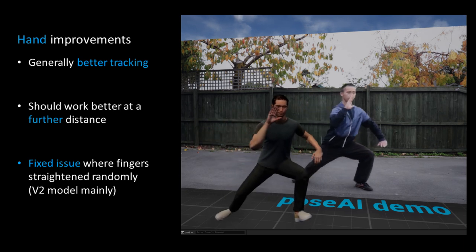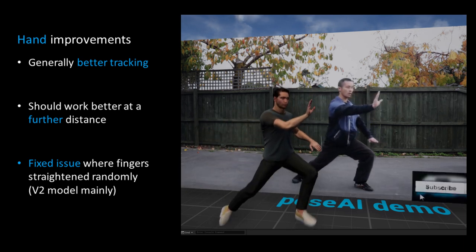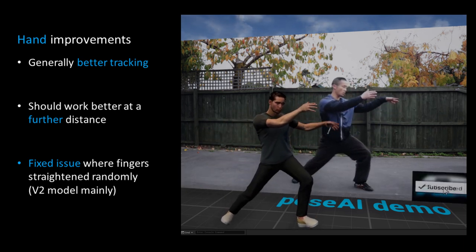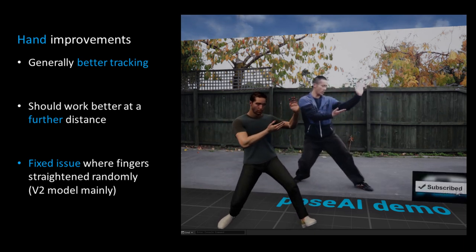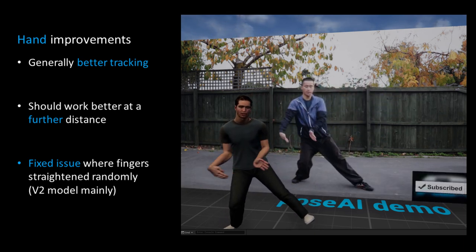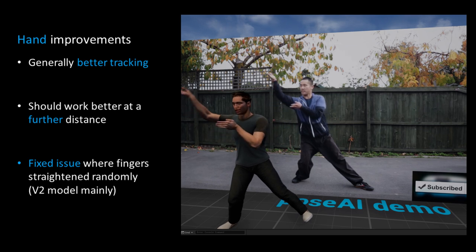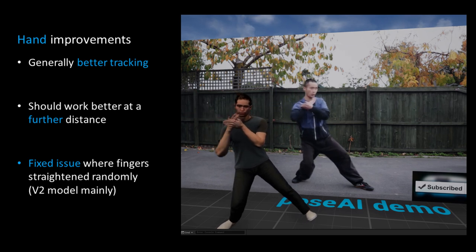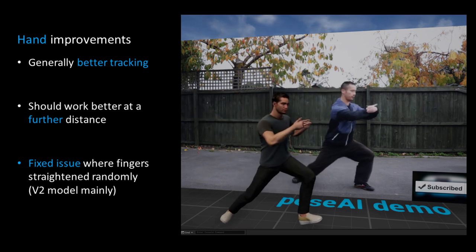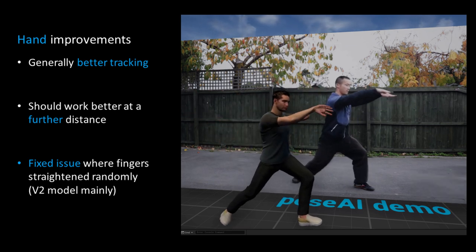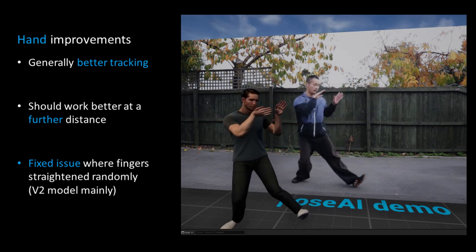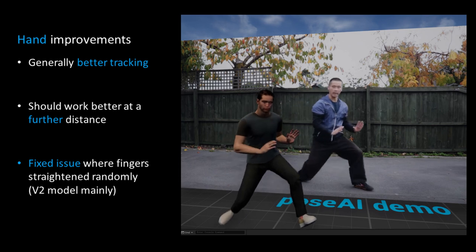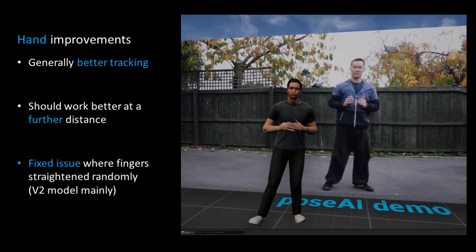This release also improves our hand tracking, which helps our AI model produce better predictions and even allows greater distances from the camera. We also resolved an issue where sometimes a finger animation would straighten, even though the hand was closed.